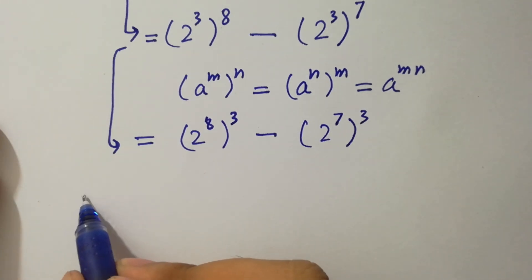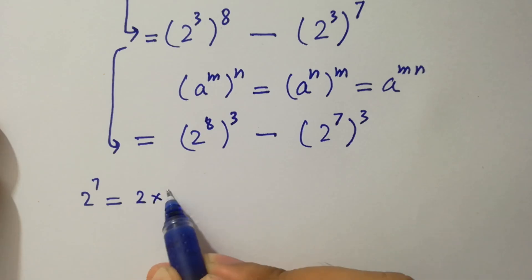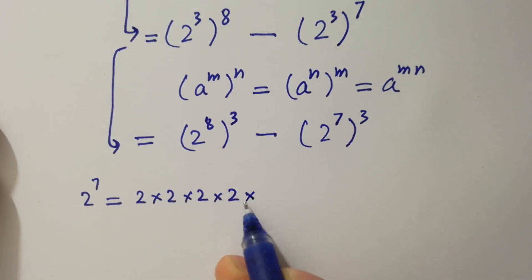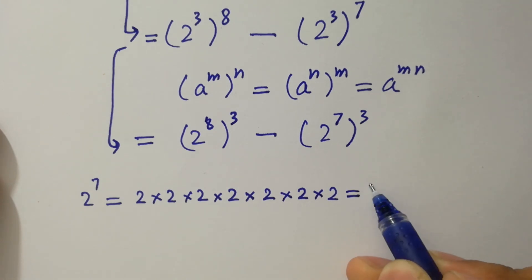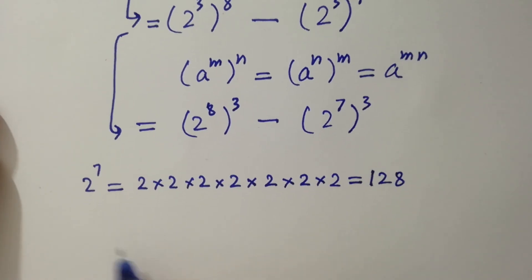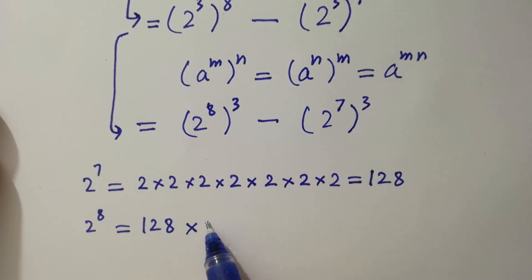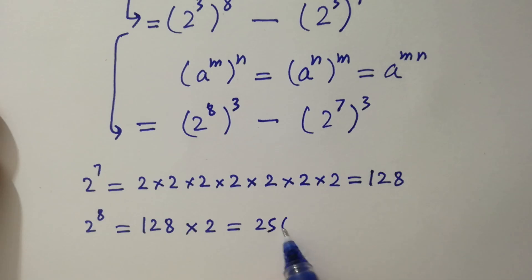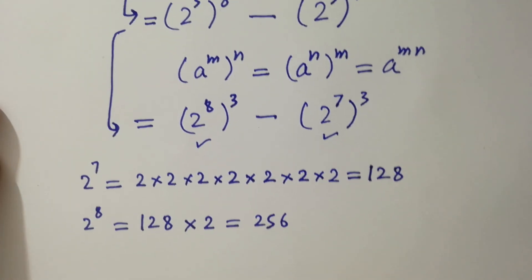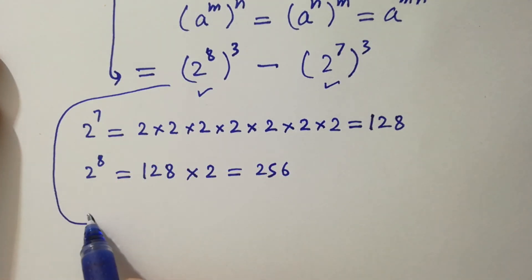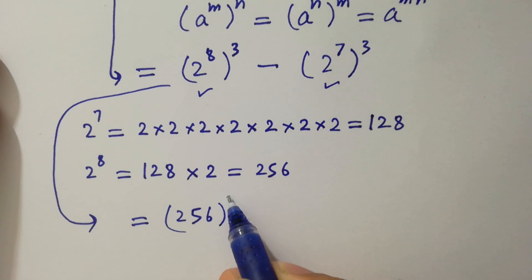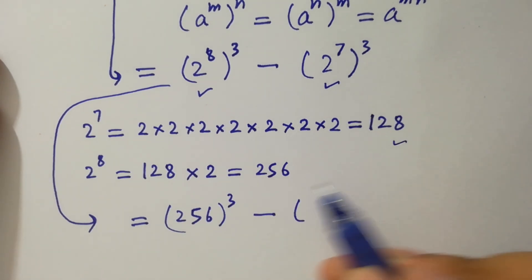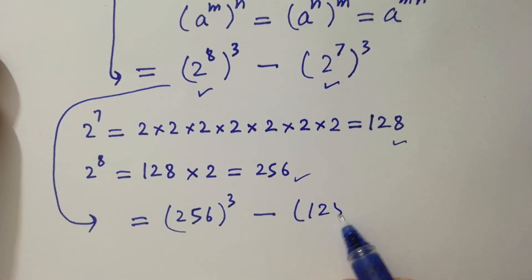Now, 2 to the power 7 equals 2×2=4, 4×2=8, 8×2=16, 16×2=32, 32×2=64, and 64×2=128. And 2 to the power 8 will be equal to 128 times 2, which equals 256. Putting these values in, we have 256 to the power 3 minus 128 to the power 3.